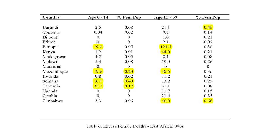We went to do it by country to see if certain countries within these regions were more responsible. Looking at East Africa, there's massive variation. The missing younger girls are mainly in Ethiopia, Mozambique, Somalia, and Tanzania. For the older women, it's Ethiopia, Kenya, Mozambique, and Zimbabwe. These larger numbers also reflect larger percentages of the female population.